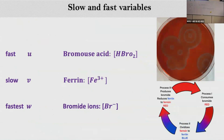Three key variables are needed for the reaction-diffusion equation. Variable U corresponds to the concentration of bromous acid - the fast variable. Variable V measures the concentration of Fe3+ ions when in the oxidized state. Variable W is the fastest variable, measuring the concentration of bromide ions. The ordering from fastest to slowest is W, then U, then V - all based on experimental measurements.